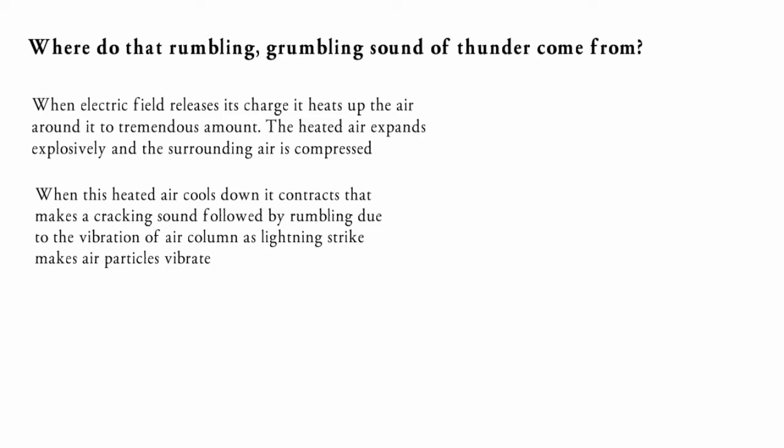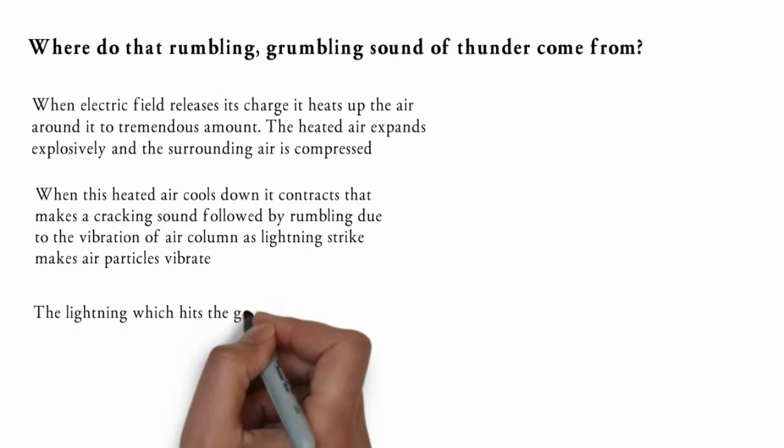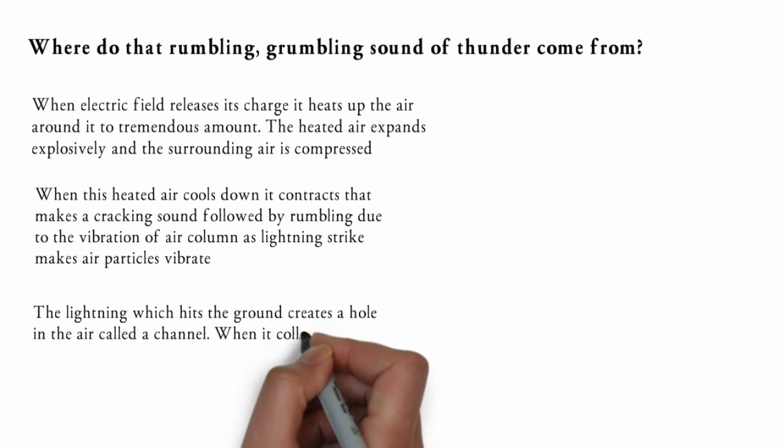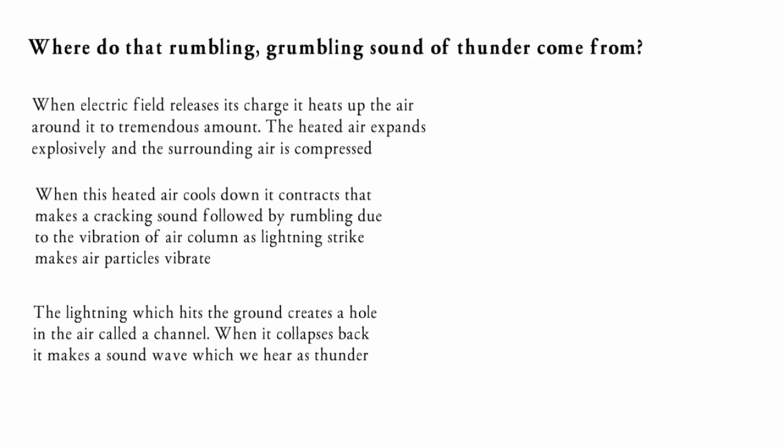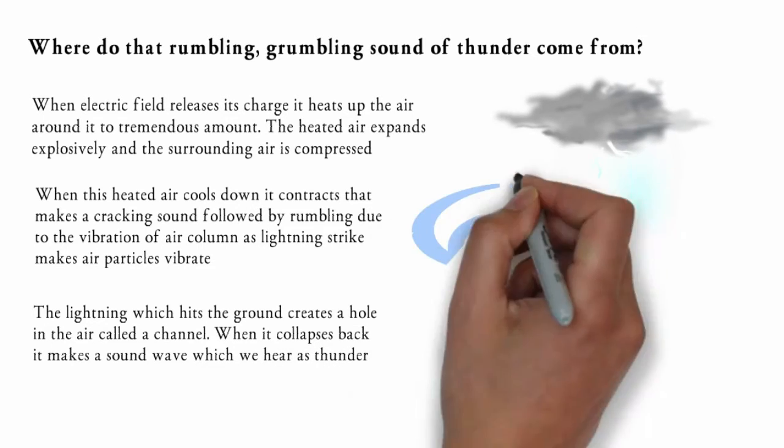as lightning strikes make air particles vibrate. The lightning which hits the ground creates a hole in the air called a channel. When it collapses back, it makes a sound wave which we hear as thunder.